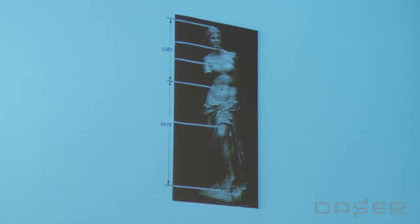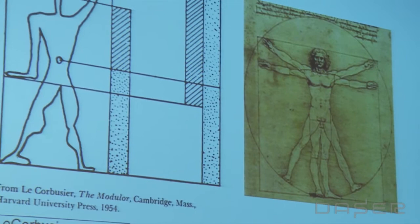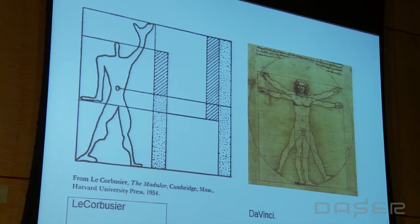Architects like proportional systems because when you use one, everything relates to everything else, creating what we call harmony. Leonardo — who I would call an architect — and Le Corbusier, who everybody calls an architect but was also a painter, show lines connecting the two approaches. Le Corbusier's system, called the Modular — that's the Modular Man — defined everything from the height of a person to the height of a countertop to where a doorknob ought to be, all based on the Fibonacci series, which is strongly related to the golden section.